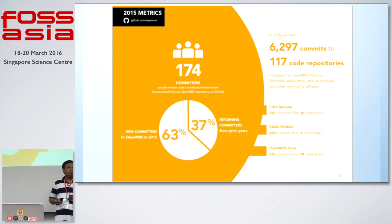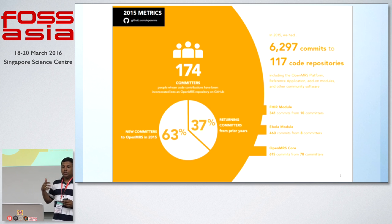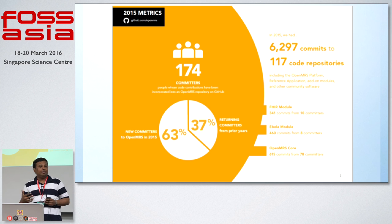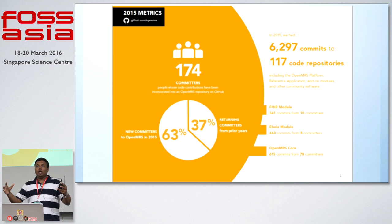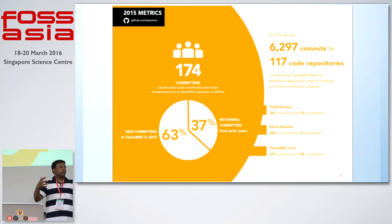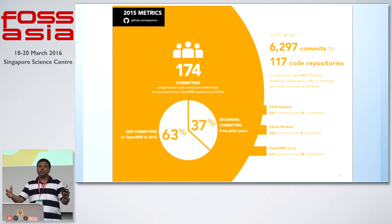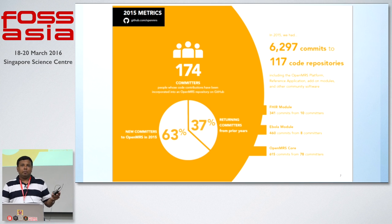Here are some metrics from our last annual report: about 174 committers, 6,000 commits, and 117 core repositories. But this is only our core development that we coordinate and think of as our repositories. There are many more repositories that go on and happen on their own.